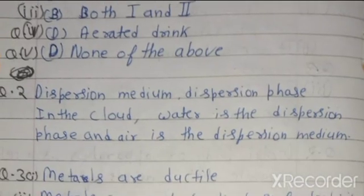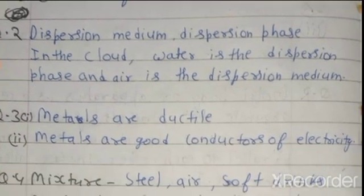Answer: C, third is B, fourth is D, fifth is D. Second answer: Dispersion medium and dispersion phase. In the cloud, water is the dispersion phase and air is the dispersion medium.